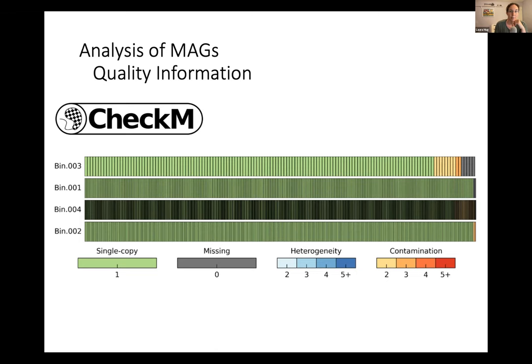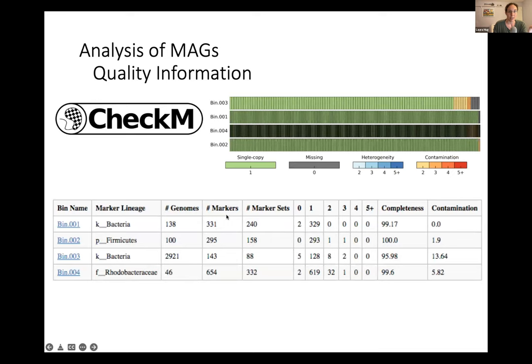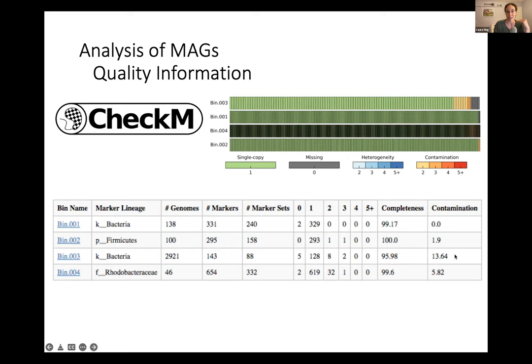These are all pretty high-quality bins. Looking at the data more deeply: bin one was classified to Bacteria but no deeper, 99.17% complete with no contamination — missing a couple of marker genes out of a relatively big set but no duplications. Contrast that with bin three, which is 95% complete but 13% contamination. In my lab, we typically draw a limit at about 70% complete — that's enough of a genome to get a sense of what the organism is doing within a community — and contamination we cut off at about 5 or 10%. At that point it gets too difficult to say with confidence whether an interesting pathway we've never seen in this group before might just be contamination.